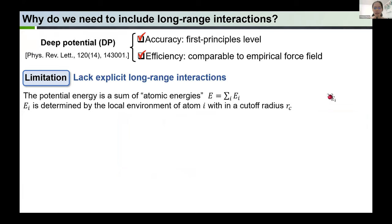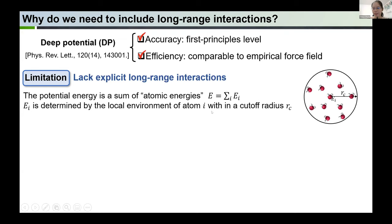Despite the above success, we have to mention that like most machine learning models, DP has one important limitation: it lacks explicit long-range interactions. Because the potential energy in DP is the sum of atomic energies, and this atomic energy E_I of atom I is determined by the local environment of atom I within a cutoff radius R_C. So it's a local representation. However, the electrons and nuclei in the system are charged particles that experience long-range Coulomb forces. This is missing in DP.